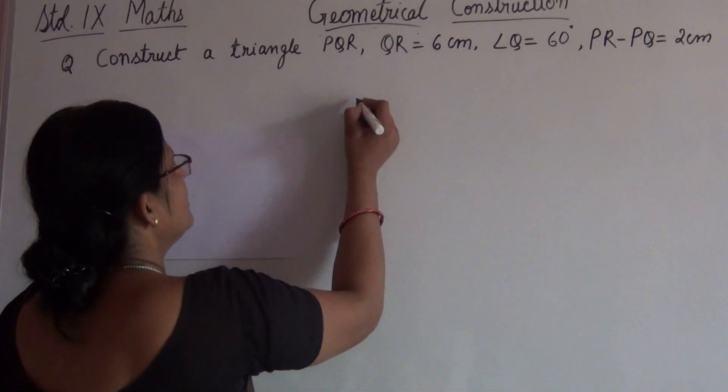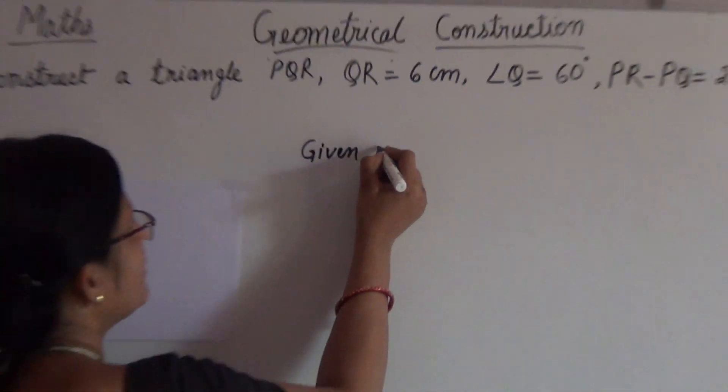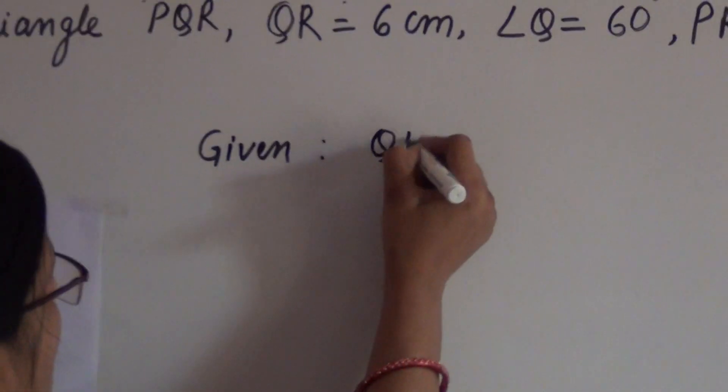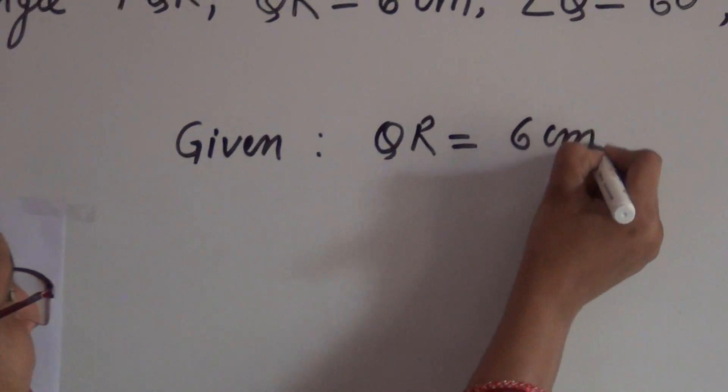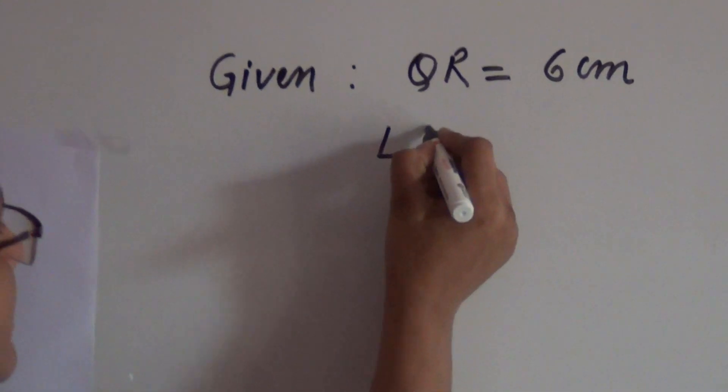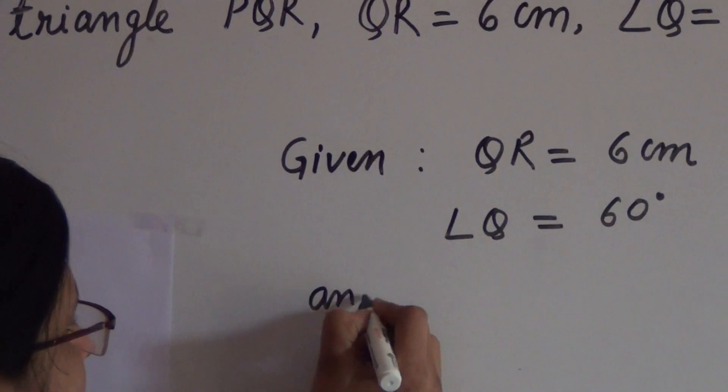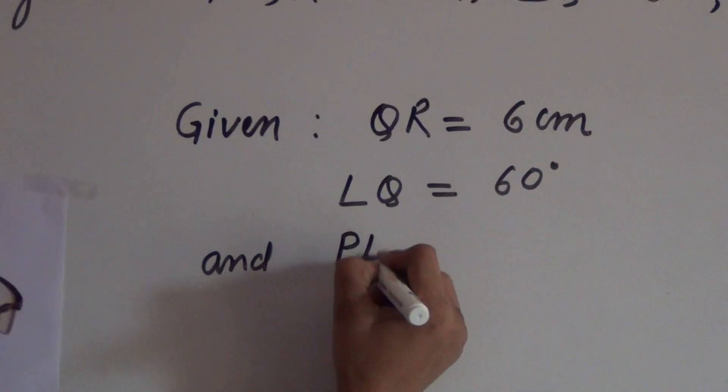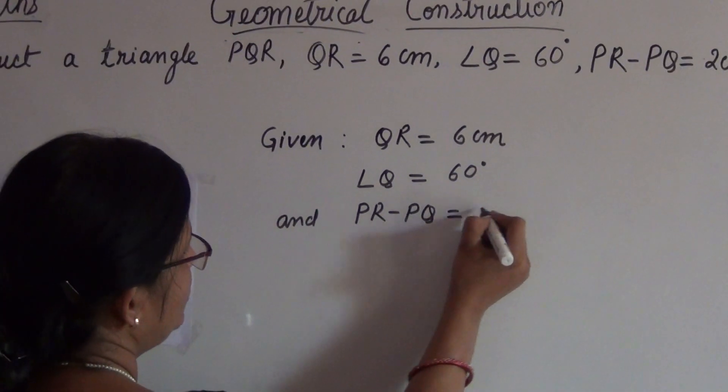First of all, let us write the given information: QR is equal to 6 centimeters, angle Q is equal to 60 degrees, and PR minus PQ is equal to 2 centimeters.